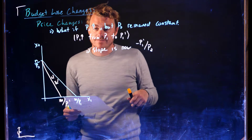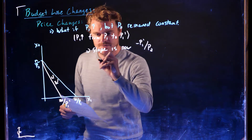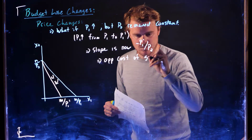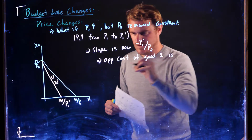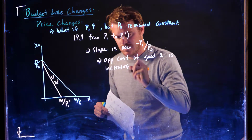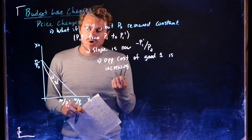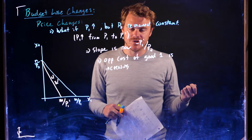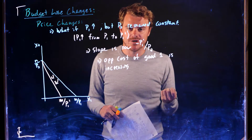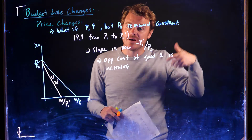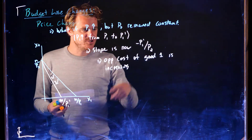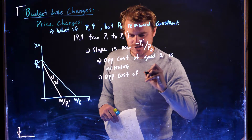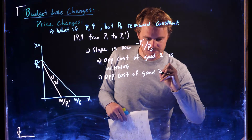The slope is now negative P1-prime over P2, and because the numerator is getting bigger, the opportunity cost of good 1 is increasing. In order to get one more unit of good 1, the consumer now has to give up P1-prime over P2 units of good 2, whereas before they only gave up P1 over P2 units. Since P1-prime is bigger than P1, the opportunity cost of good 1 is increasing, while the opportunity cost of good 2 is decreasing.